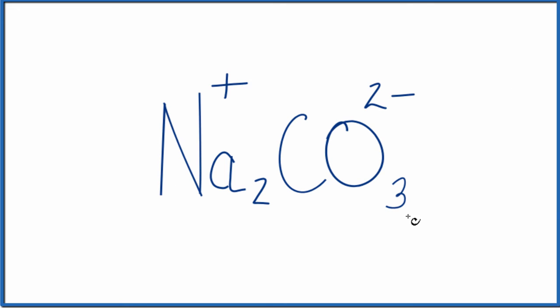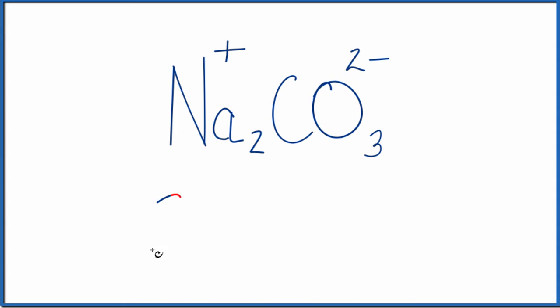If you put sodium carbonate in water, it dissolves, dissociates into its ions. You get two of these sodium ions, Na plus, and you get the carbonate ion, CO3, the two minus.